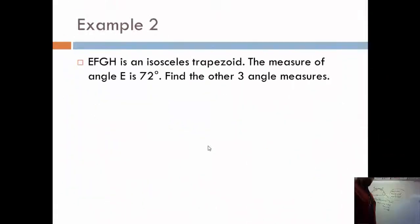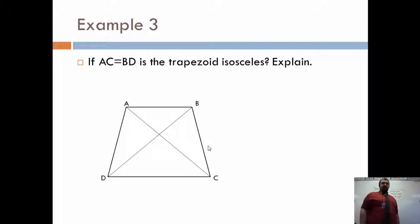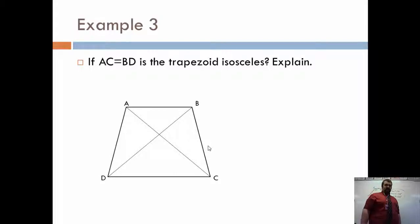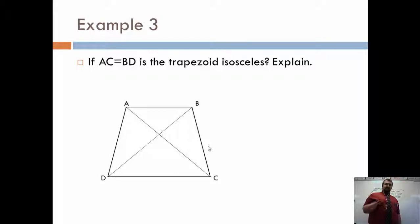One last example for isosceles trapezoids. In this picture, segment AC and segment BD are equal — the diagonals are congruent. Is the trapezoid isosceles? By Theorem 8.6, a trapezoid is isosceles if and only if the diagonals are congruent. Segments AC and BD are the diagonals and they're congruent. So this trapezoid is isosceles because the diagonals are congruent. That's literally what I'd write.